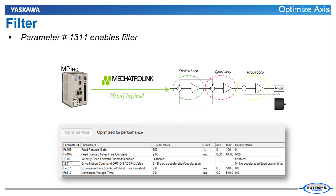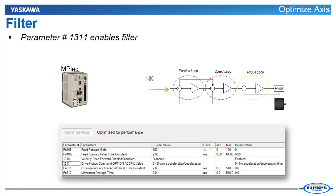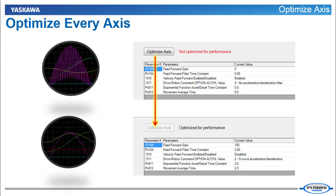Even without controller feedforward, the controller position command is still received at the Mechatrolink cycle. A servo motor tuned for high performance can respond very quickly, producing torque ripple at this rate. The command can be smoothed out using a filter selected by parameter 1311. This distributes the position command over the Mechatrolink cycle. The servo pack internal position loop receives the filtered position command, resulting in smooth motion with low torque ripple and reduced motor heating.